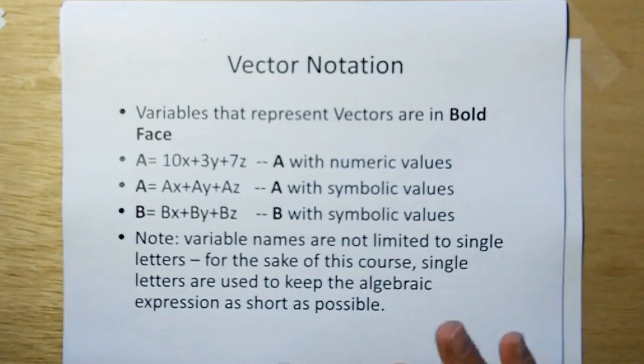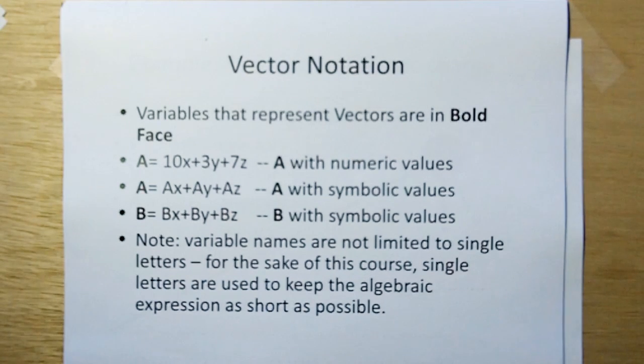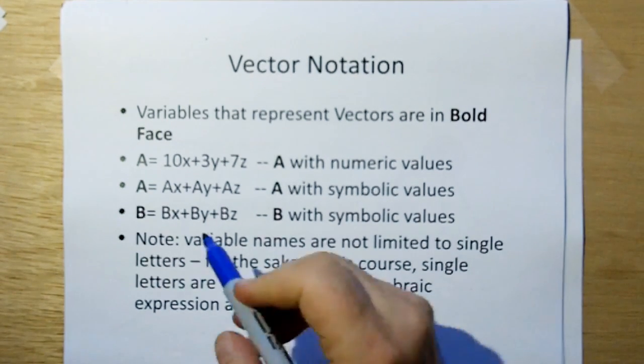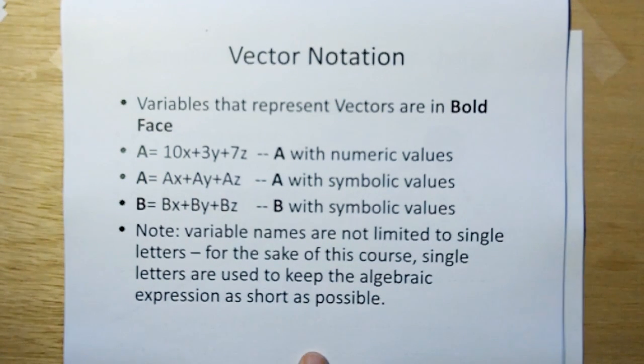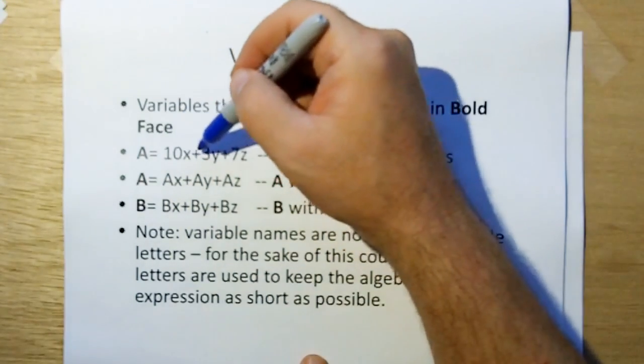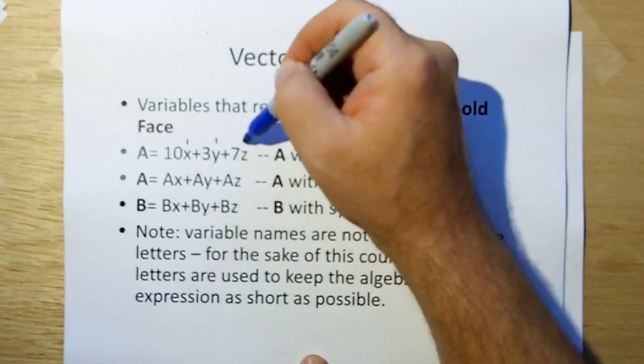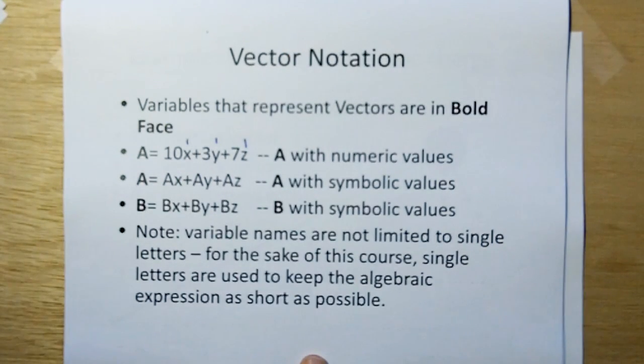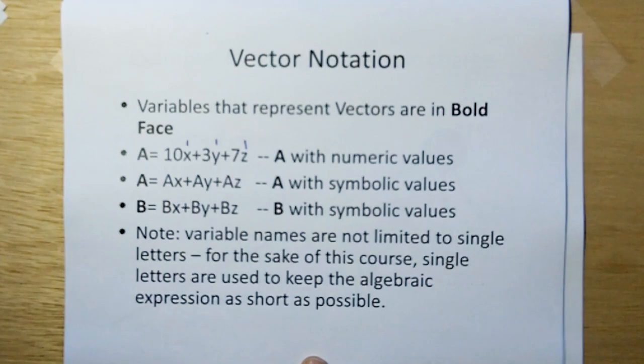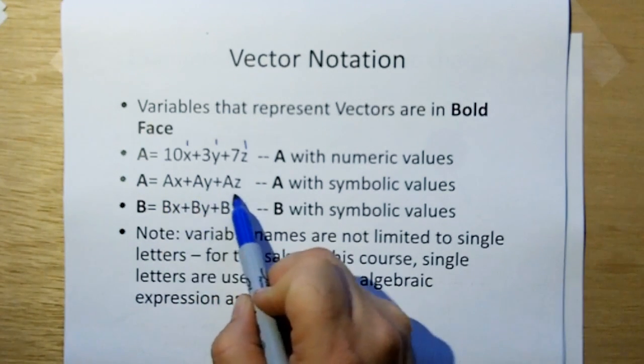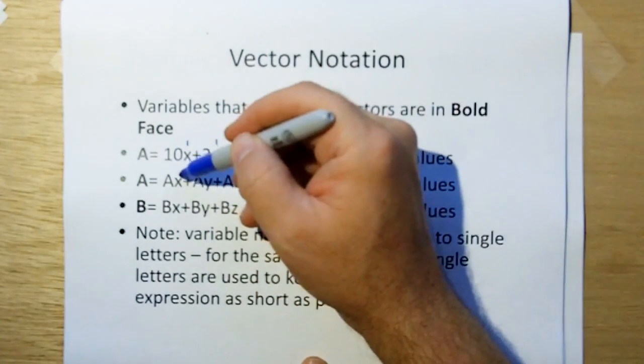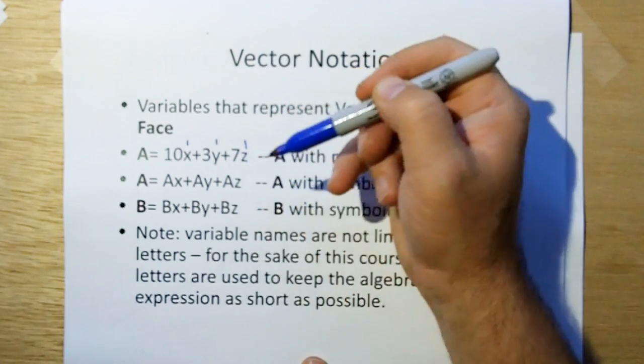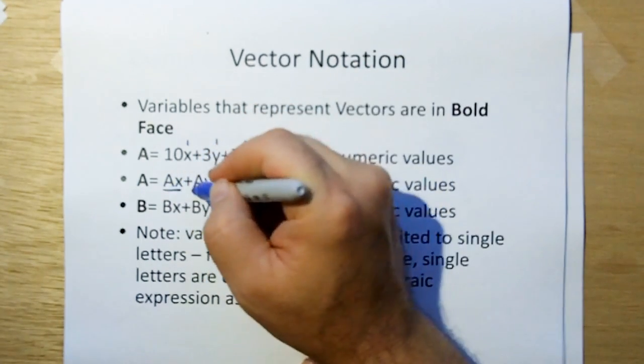So vector notation. How do we write stuff down so that we can talk to each other? Variables that represent vectors are typically boldface. And when we have a vector and we want to represent it with quantity, numeric values, we'll say 10x plus 3y plus 7z, where these values represent the coordinates of the coordinate system, the orthogonal components of the coordinate system being used. Now when we don't have actual numbers yet, when we're just trying to work with vectors from the standpoint of hypothetical, we don't know what the values are just for an expression, we could say that A is equal to Ax plus Ay plus Az, where this means the component of A in the x direction, the component of A in the y direction, and the component of A in the z direction. This represents one variable, not two, even though there's two characters.